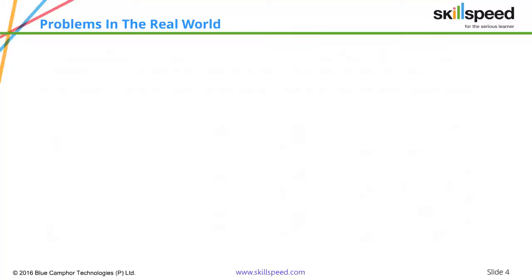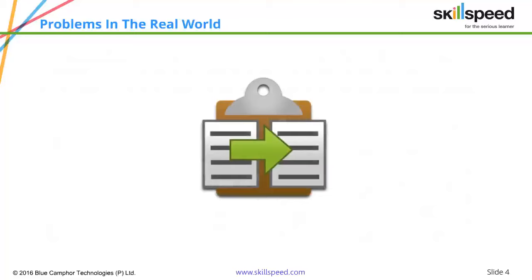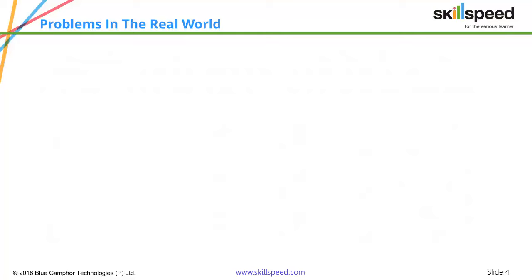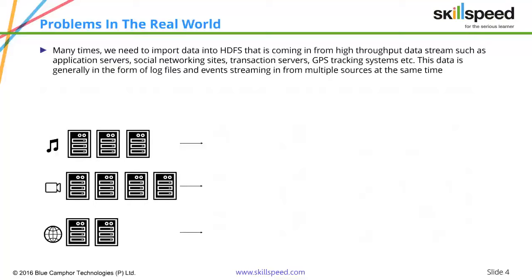We have already seen one tool called Sqoop. Sqoop allows an RDBMS system to connect to Hadoop and transfer structured data. The second method is that you can manually copy the data if the file is present in the local file system. However, many times we face a situation where we have to take data from external systems and continuously dump it into Hadoop. We call such type of data streaming data — for example, application server logs, social networking files, or GPS tracking systems. All these systems continuously generate data.